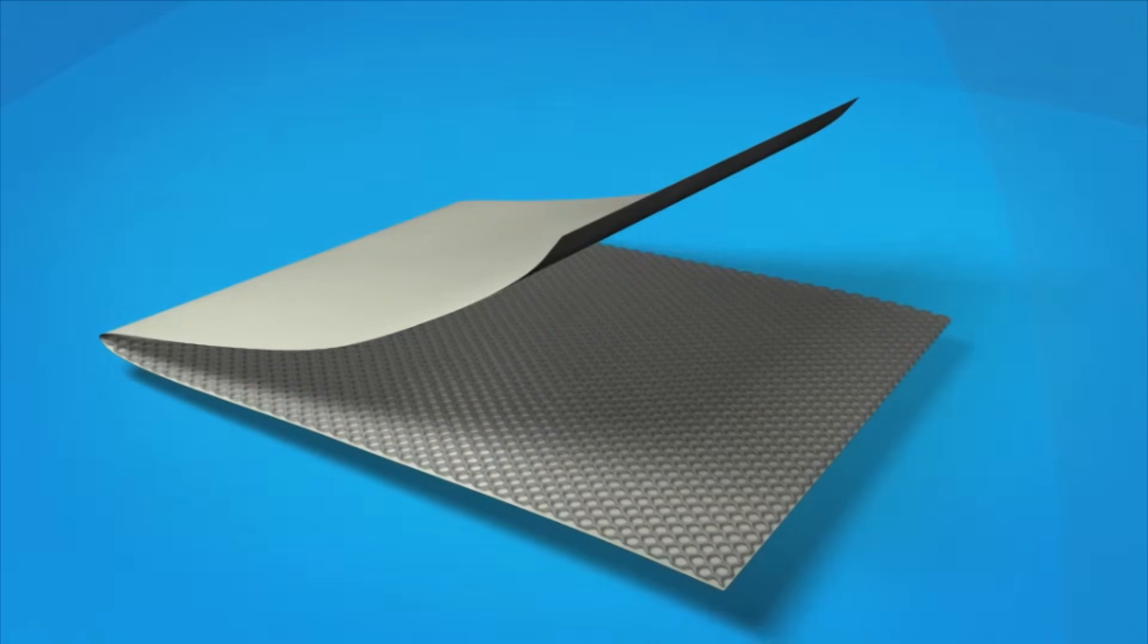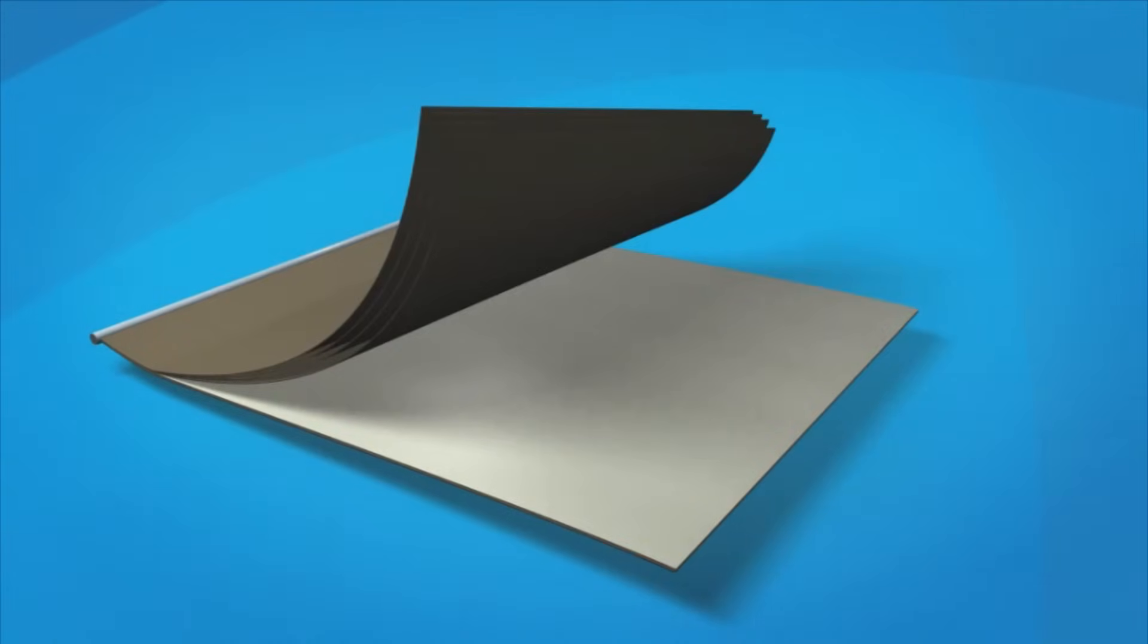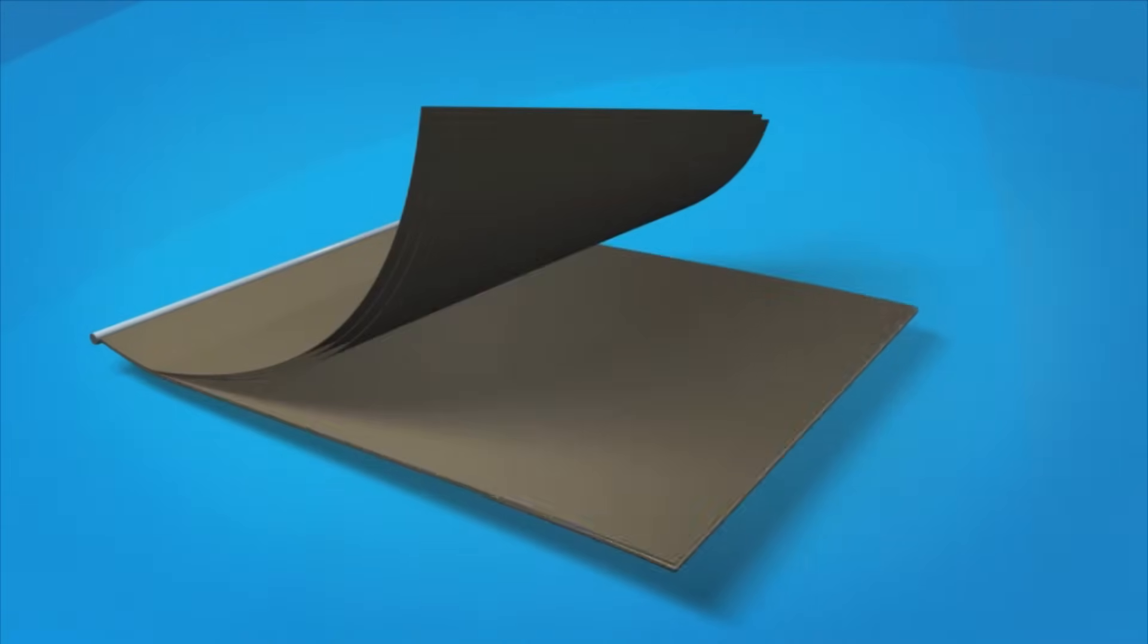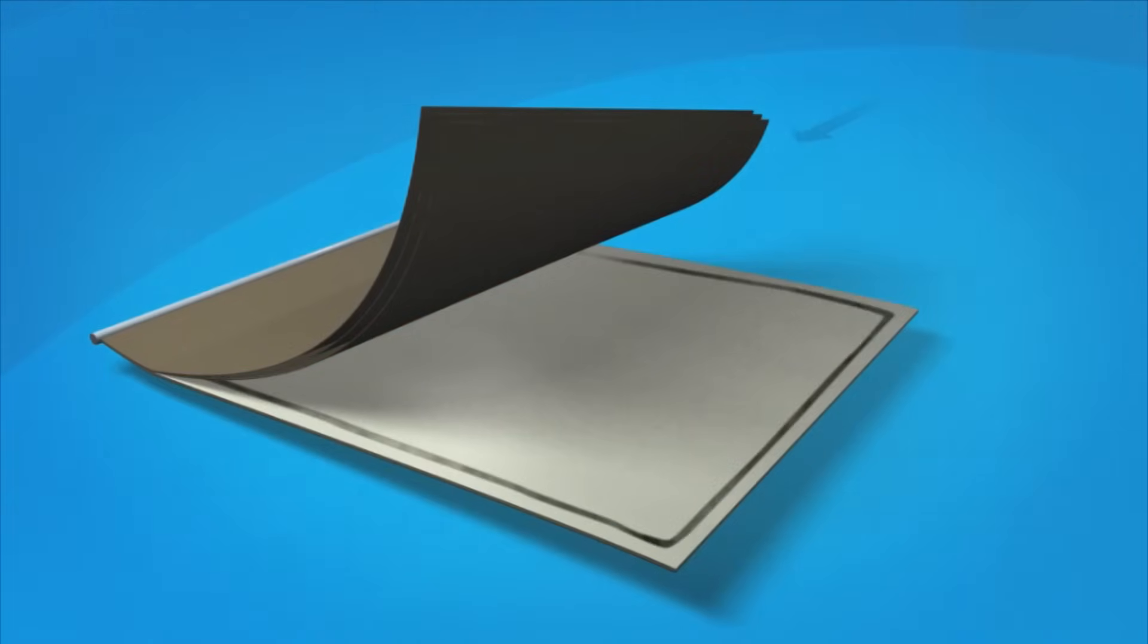A sheet of permeate spacer is added to the membrane sheets and feed channel spacer. This enables the final recycled water product, or permeate, to flow evenly across the entire membrane surface, even under high pressure.